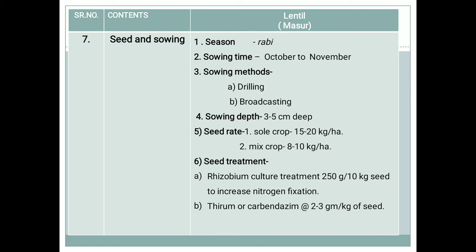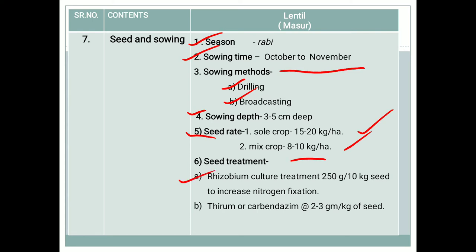Regarding seed and sowing: it is a rabi season crop. Sowing time is in the month of October and November, based on availability of moisture. Sowing methods include drilling, and somewhere broadcasting is also followed. Sowing depth is 3 to 5 cm deep. Seed rate depends on whether it is a sole crop or mixed crop — for sole crop, 15 to 20 kg per hectare; for mixed crop, 8 to 10 kg per hectare. Seed treatment includes Rhizobium culture at 50 grams for 10 kg of seed to increase nitrogen fixation. Chemical seed treatment with Thiram or Carbendazim or Carbofuran is used at 2 to 3 grams per kg of seed.